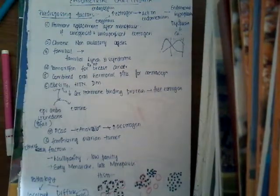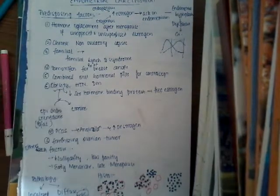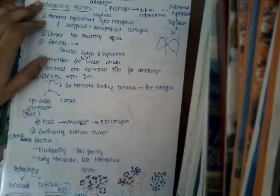There are around eight predisposing factors, plus two others, and all of these cause increased estrogen either endogenously or exogenously. The first predisposing factor is hormone replacement therapy. Many women after menopause use hormone replacement therapy, and if this is unopposed and unsupervised estrogen, it acts on the endometrium causing endometrial hyperplasia, dysplasia, and carcinoma.